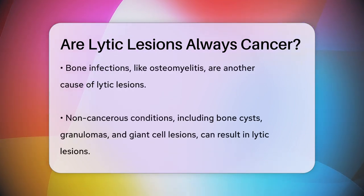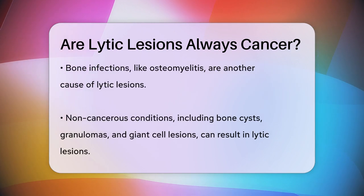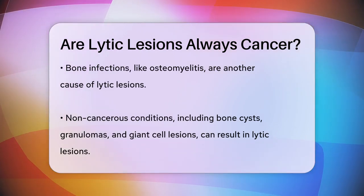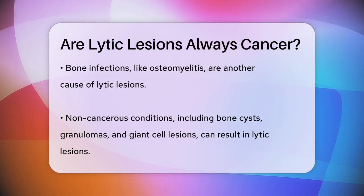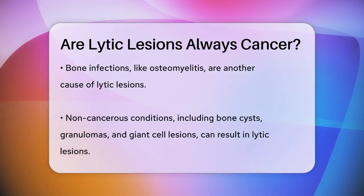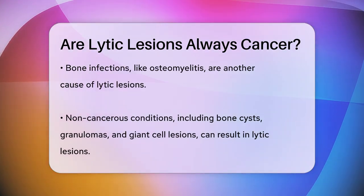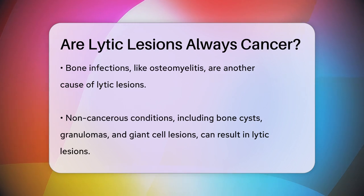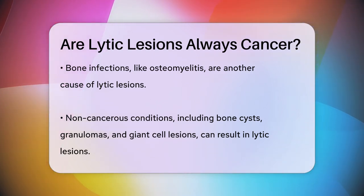In multiple myeloma, for example, the cancer cells disrupt the normal balance between bone breakdown and bone buildup by activating osteoclasts to break down bone uncontrollably and inhibiting osteoblasts that build new bone. This imbalance leads to weakened bones and lytic lesions, which can cause painful fractures.